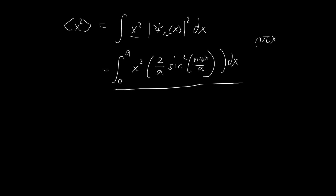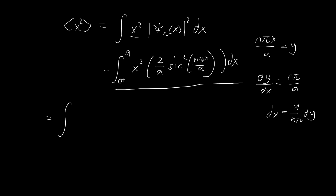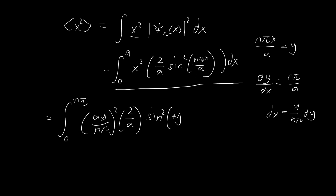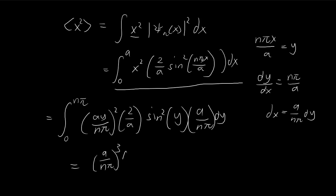To simplify things, let y = nπx/a. Then dy/dx = nπ/a, so dx = (a/nπ) dy. When x = 0, y = 0; when x = a, y = nπ. The x² term becomes (ay/nπ)², we have 2/a, sine squared becomes sin²(y), and dx becomes (a/nπ) dy. Pulling out all the constants, we have three factors of (a/nπ) and a factor of 2/a.